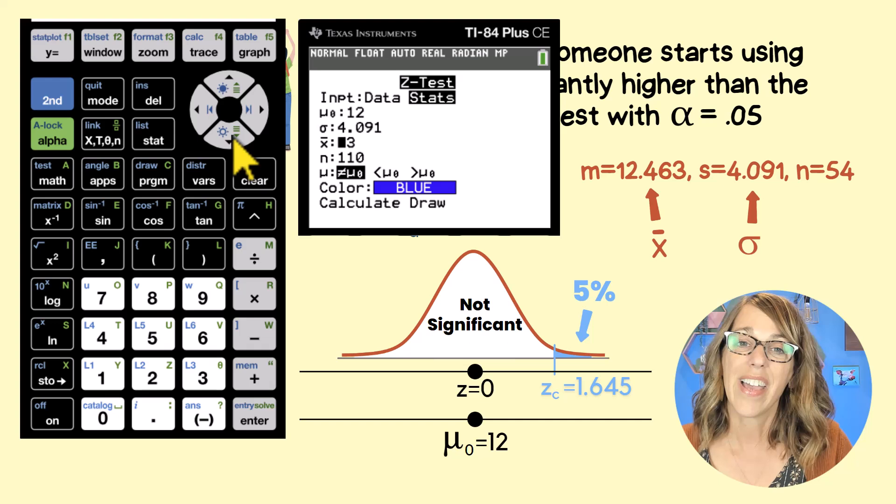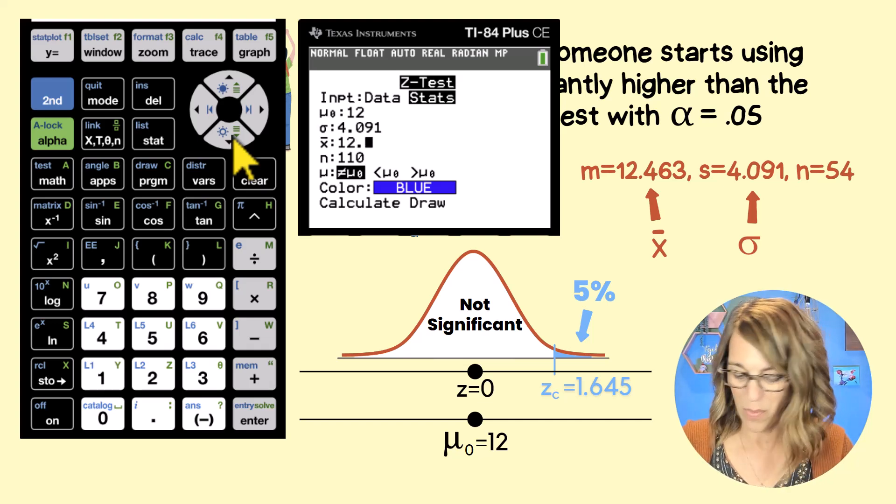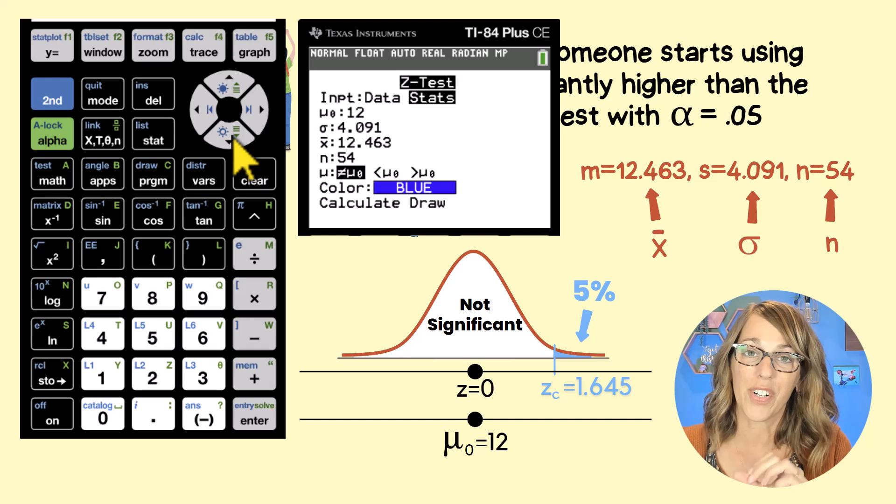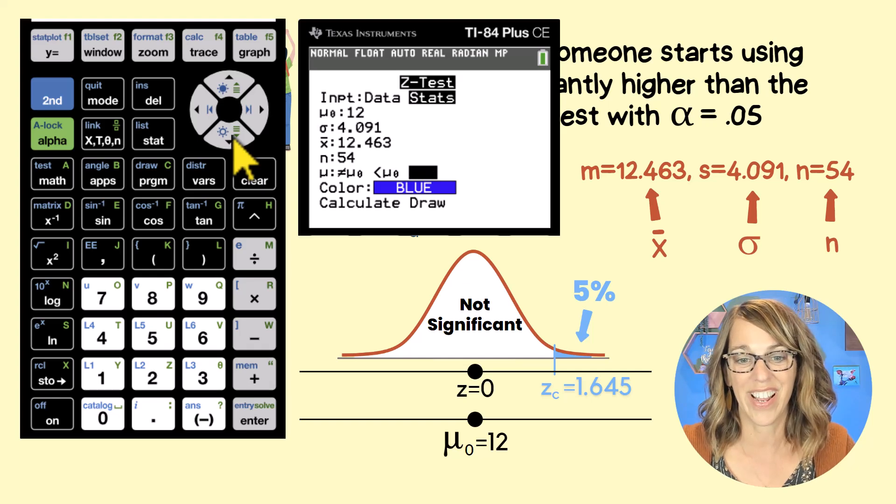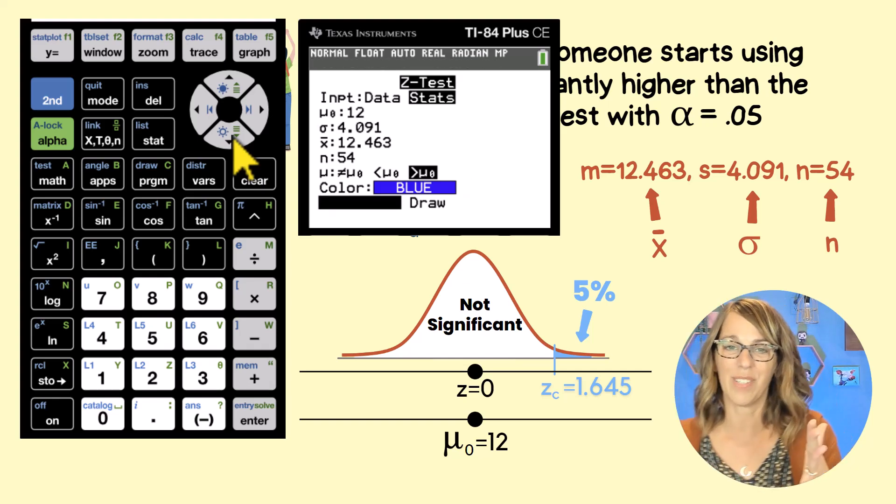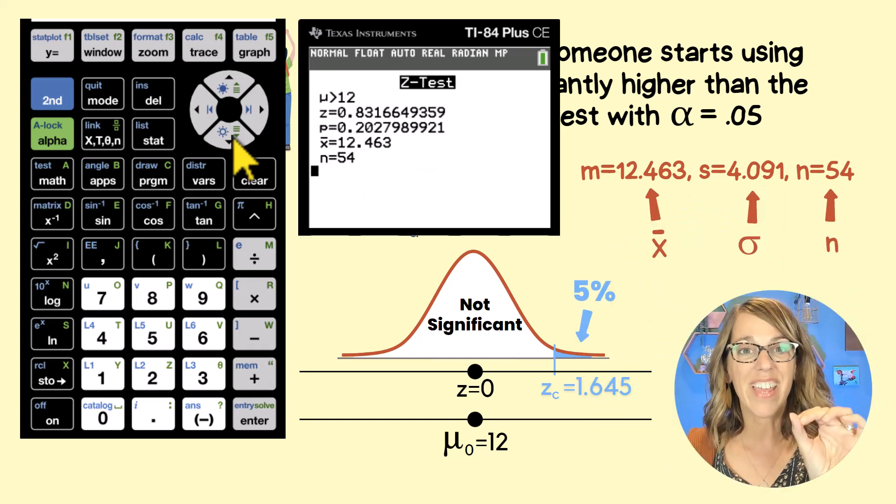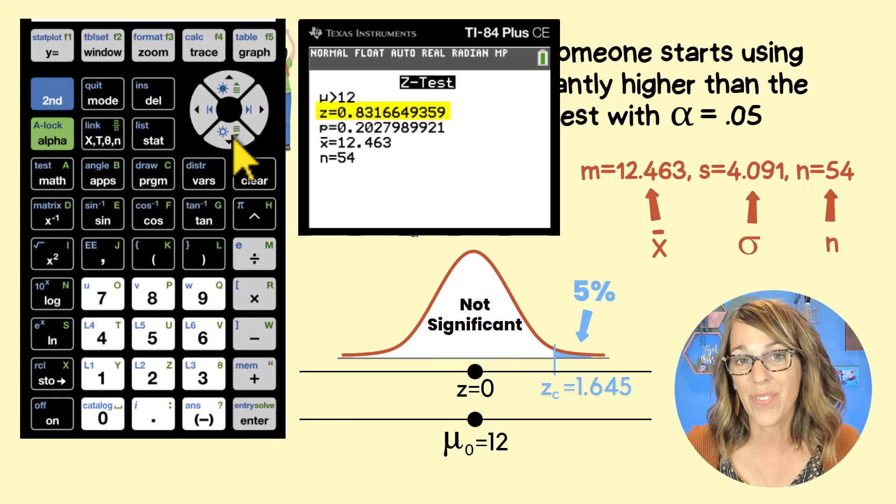We also need X bar. X bar is our sample mean. And that sample mean was 12.463. Our sample size was 54. And this line is for our alternative hypothesis, which is greater than. So arrowing over to greater than. And then we'll hit enter. And then I'm going to arrow down to calculate. This is my very, very favorite part. Let's hit enter. And we end up with that Z value. We get 0.83166. Let's call that 0.832.